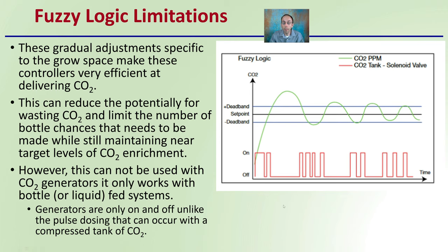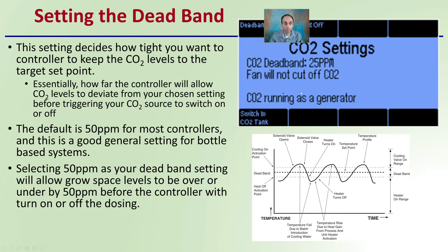We can see an example of pulse dosing here — some pulses are longer, some are shorter. Basically the controller is dialing in and making sure it stays within the target range, ideally staying within the dead band that you've set, which is the amount of tolerance you have to be above or below your actual set point.